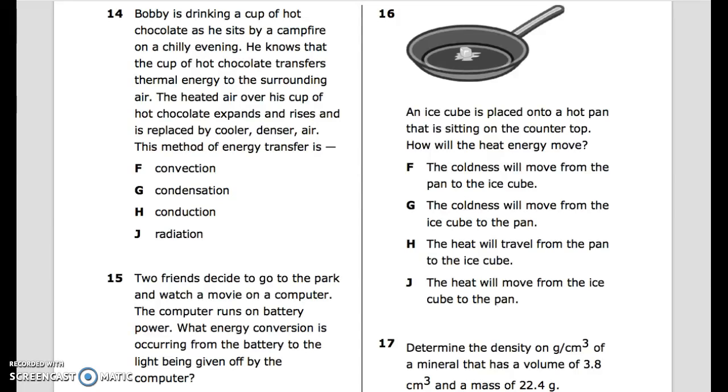Number 14: Bobby is drinking a cup of hot chocolate as he sits by a campfire on a chilly evening. He knows that the cup of hot chocolate transfers thermal energy to the surrounding air. The heated air over his cup of hot chocolate expands and rises and is replaced by cooler, denser air. This method of energy transfer is: F. Convection. G. Condensation. H. Conduction. J. Radiation.